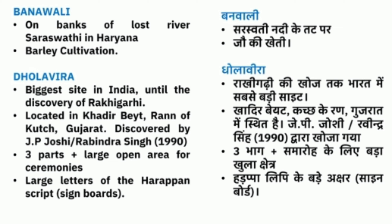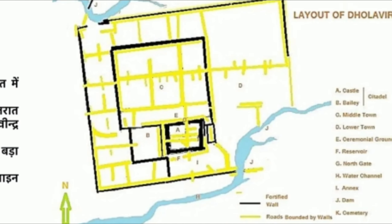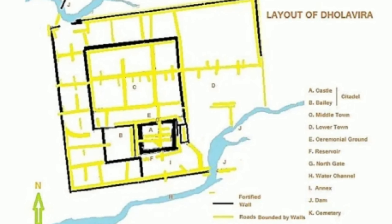Dholavira Gujarat mein sthit hai. J.P. Joshi aur Ravindra Singh ne 1990 mein isko khoja. Yahan Harappai lipi ke bade akshar wala board prapt kiya gaya. Dholavira ka layout bhi dekha ja sakta hai.